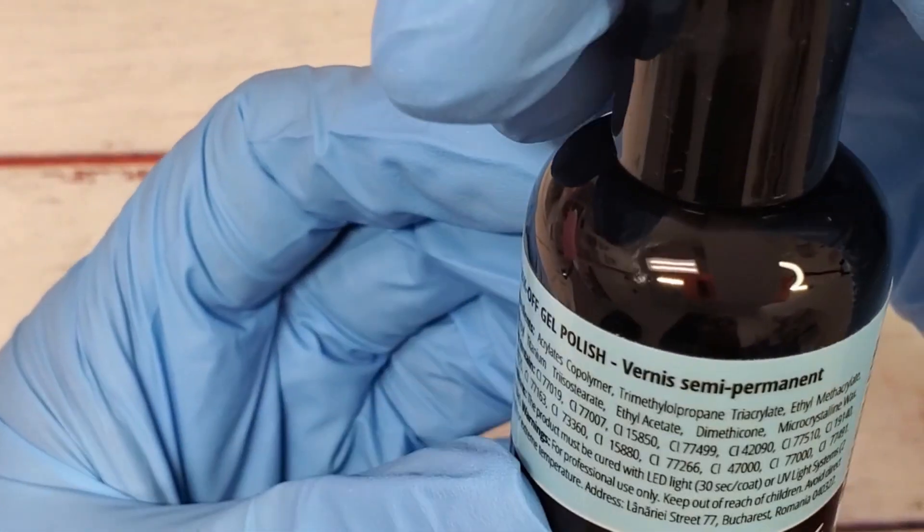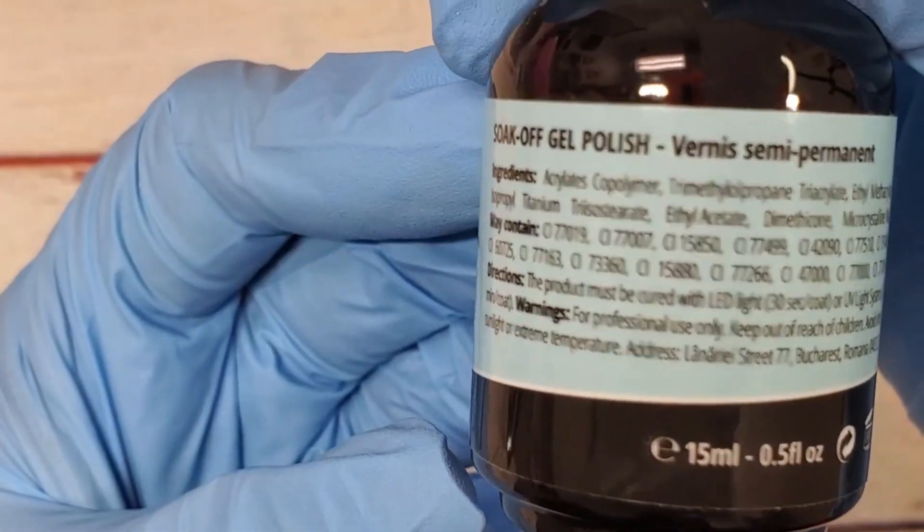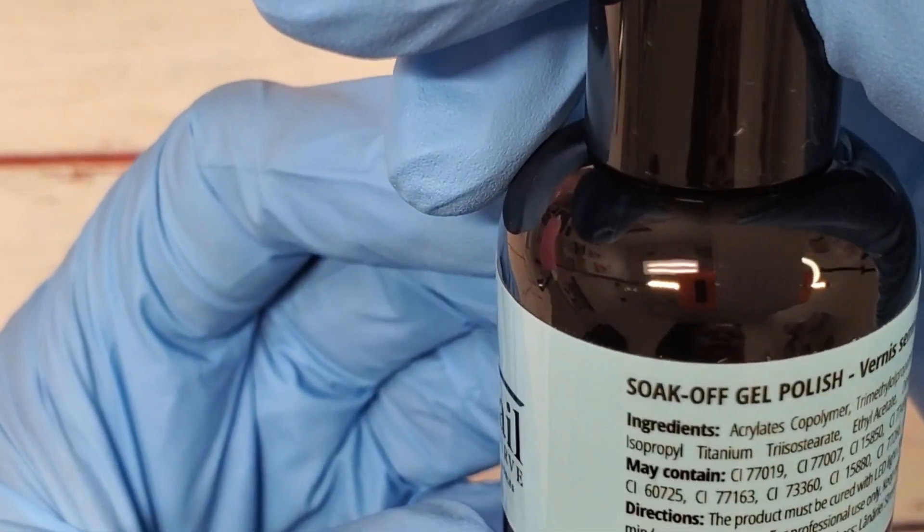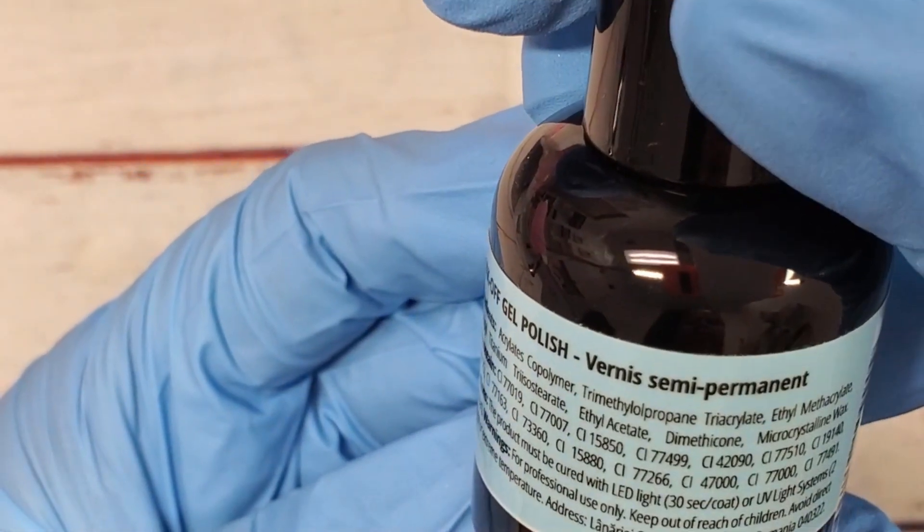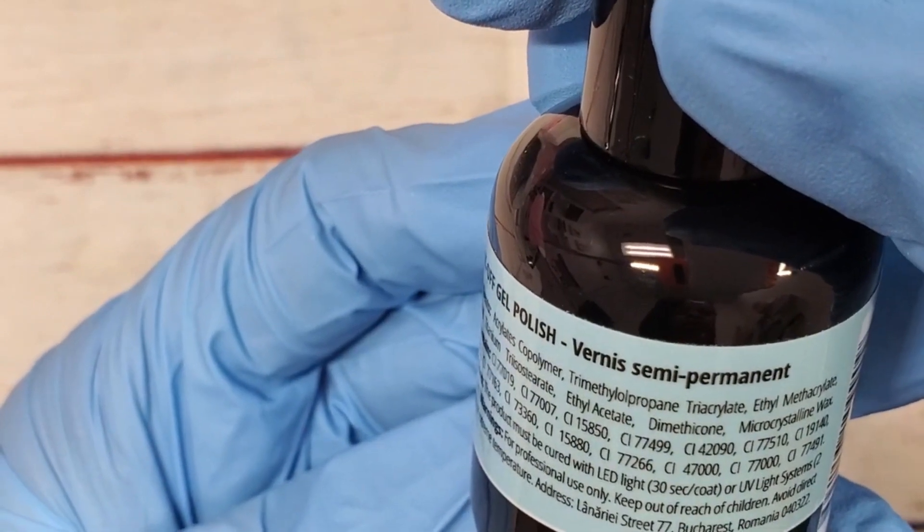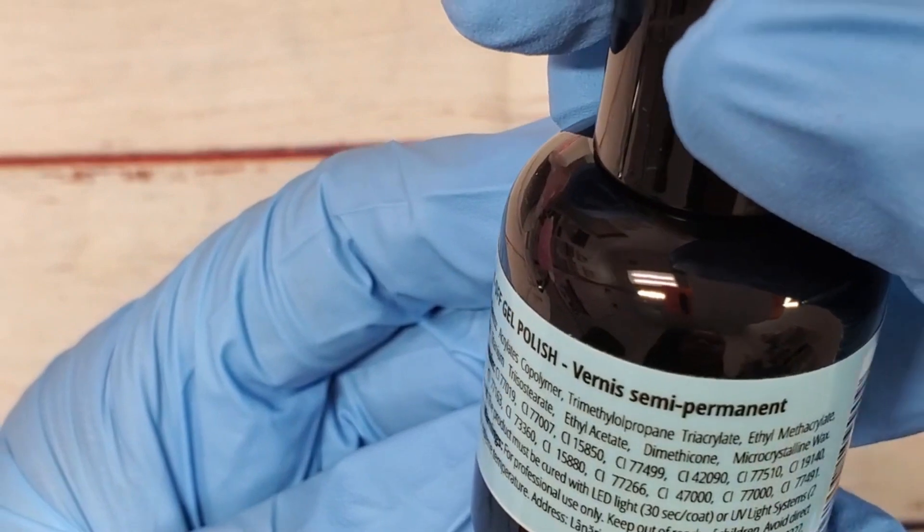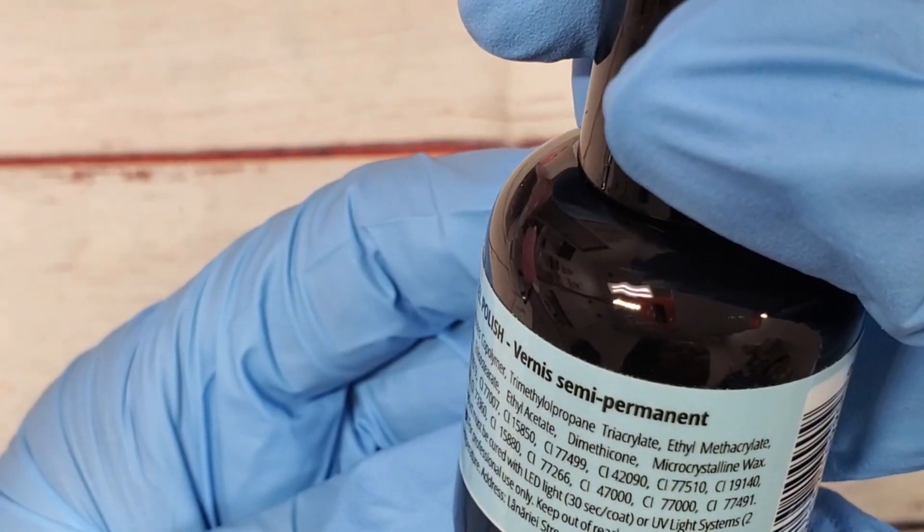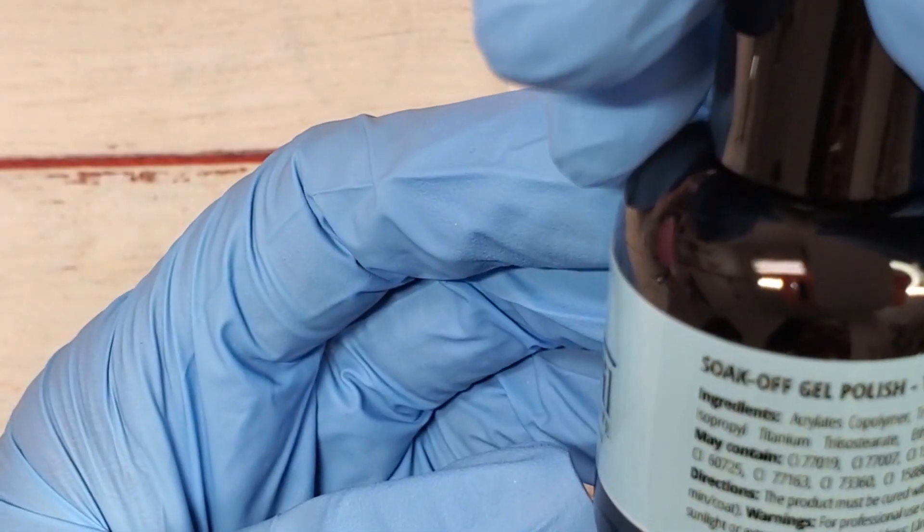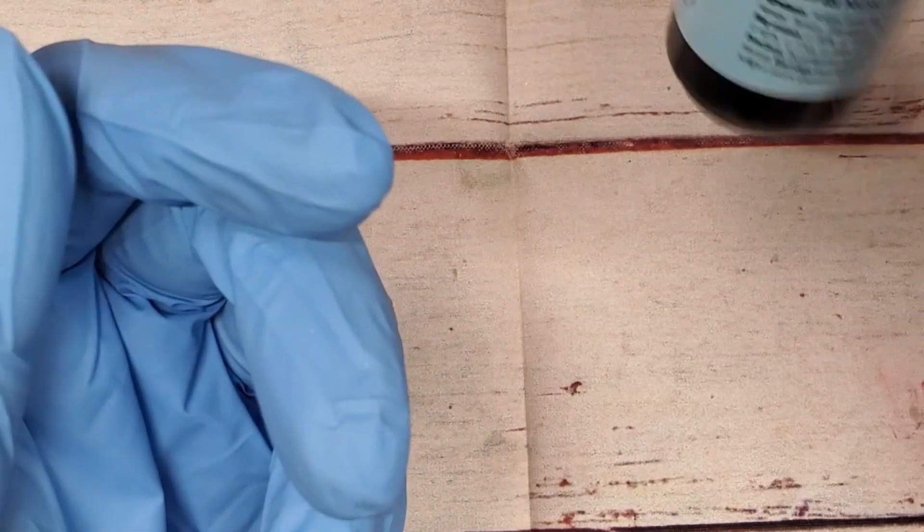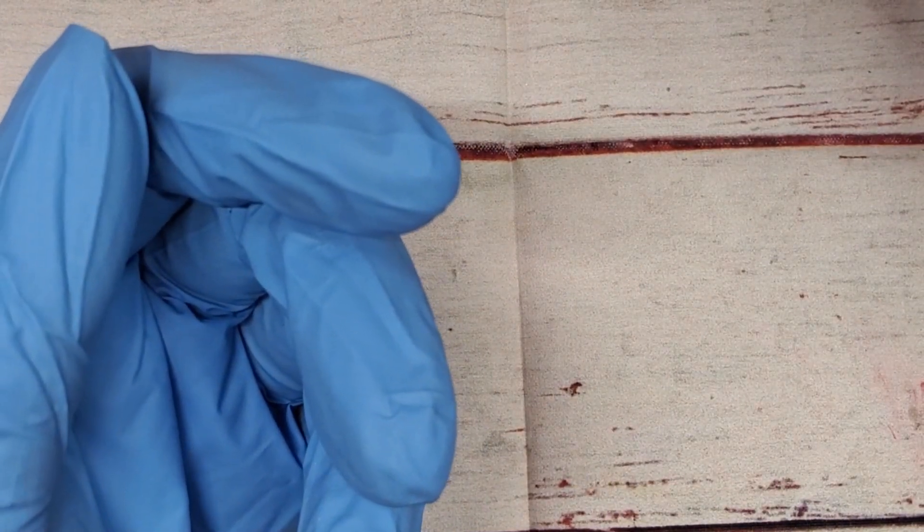I'm gonna go ahead and put it in the light, and that was Kiss and Tail. And I believe these are like 15 ml bottles, yeah. So they're 15 ml and then you have all the ingredients and directions on the back. So it says you can cure with the LED light for 30 seconds or a UV light for two minutes.